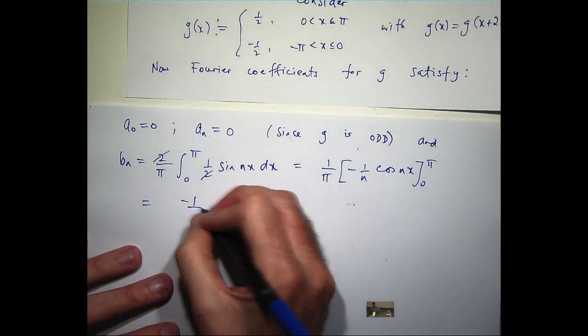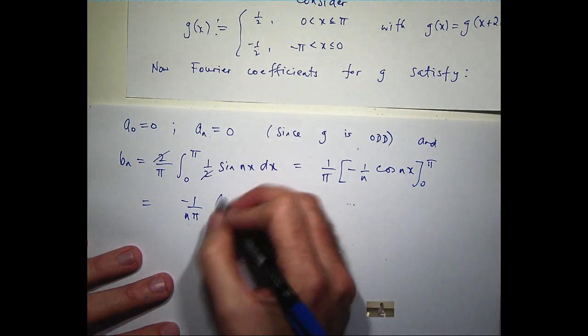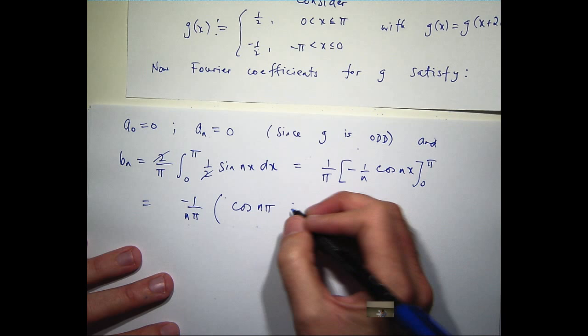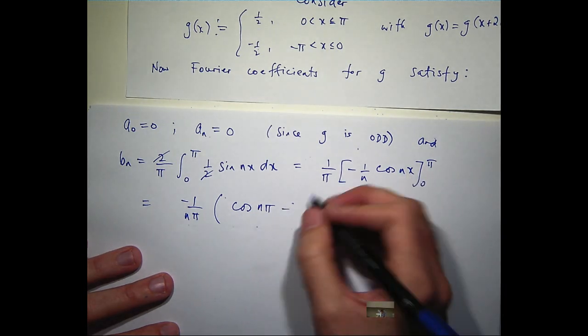So now all I need to do is calculate this. Obviously, the 2 is going to cancel. So if I integrate sine nx, I'm going to get something like cosine nx, but then I have to adjust for that n. So I get this. So now if I substitute in, well, when I sub in pi, I'm going to get cos n pi. And when I sub in 0, I'm just going to get cos of 0, which is 1.